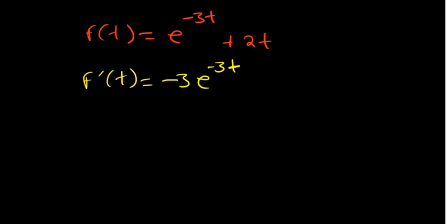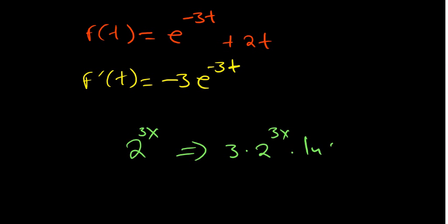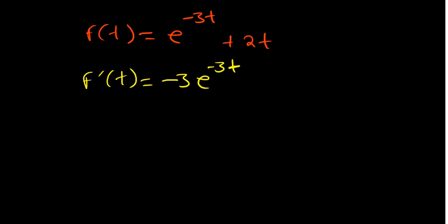For example, if you have 2^x, the derivative is 1 times 2^x times ln(2). If the power is 3x, the derivative is 3 times 2^(3x) times ln(2). For e^(2t), since ln(e) = 1, the derivative simplifies so that the derivative of 2t is just 2.